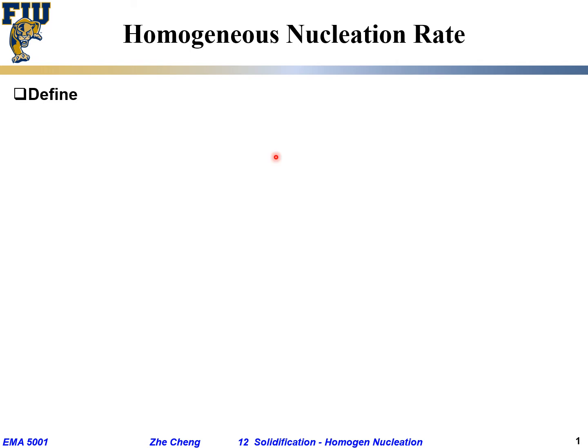One last thing about homogeneous nucleation for solidification is about nucleation rate — how fast does homogeneous nucleation happen? To get a relationship, let's first define a few terms. First is C*, representing the number density of nuclei with the size or radius of R*, the critical nucleus size.